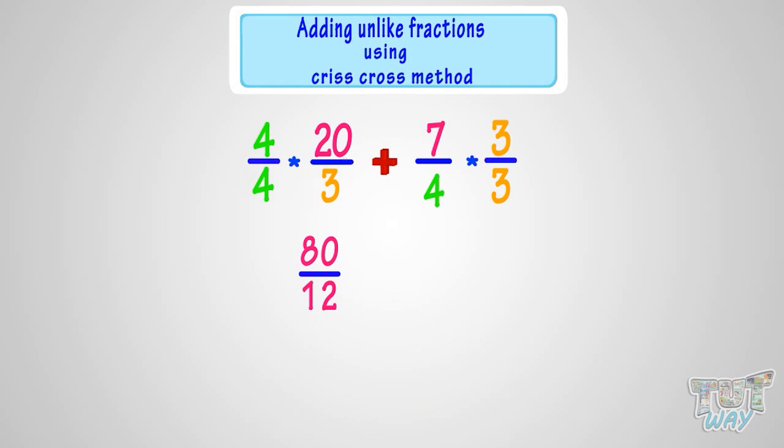3 multiplied by 7 equals 21. 3 multiplied by 4 equals 12. So it becomes 21 by 12. Now we have two like fractions to add. And we know adding like fractions is easy. Just add the numerators to add the fraction. Adding 80 and 21, we get 101. So the answer is 101 by 12.